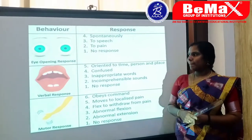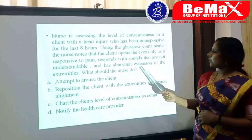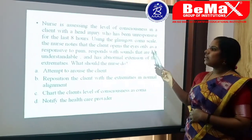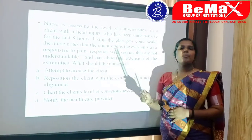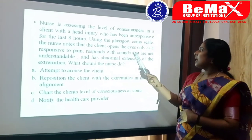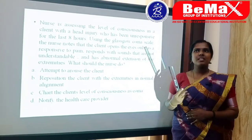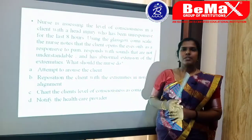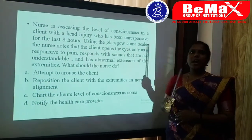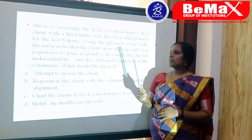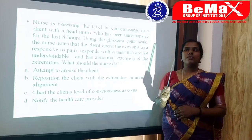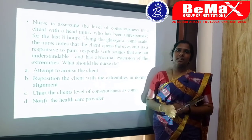Let's move on to the question. The nurse assesses the patient's GCS. The client opens the eye only in response to pain — that scores 2. The patient responds with sounds that are not understandable, meaning incomprehensible sounds — that also scores 2. Abnormal extension is present — that scores 2. So the total GCS score for this patient is 6, and we know that less than 8 indicates the patient is in coma.